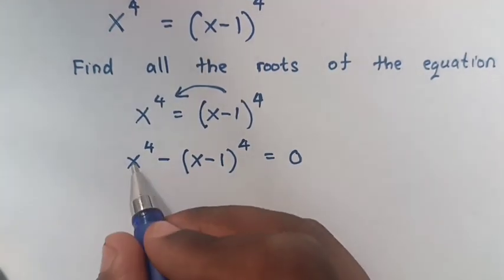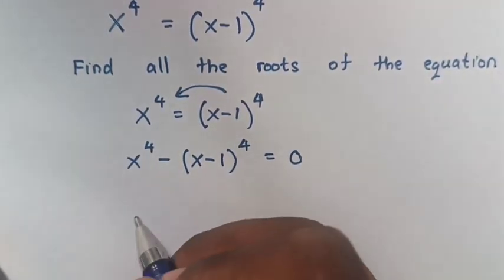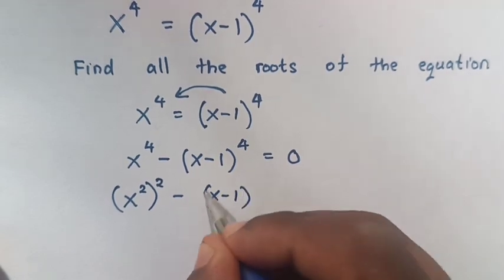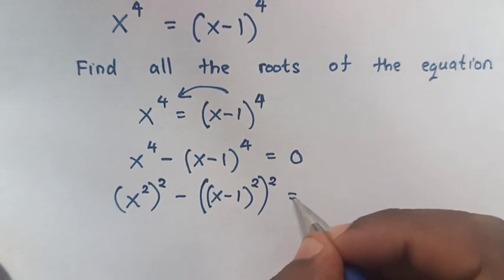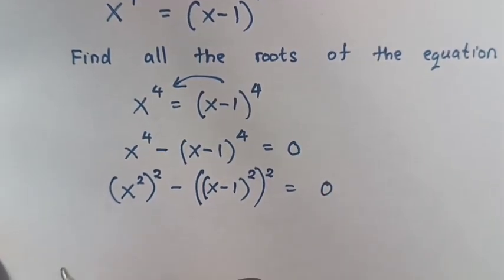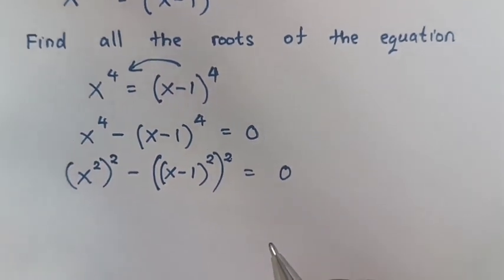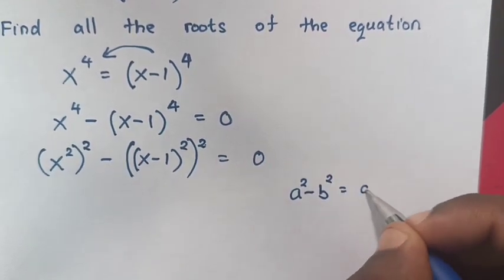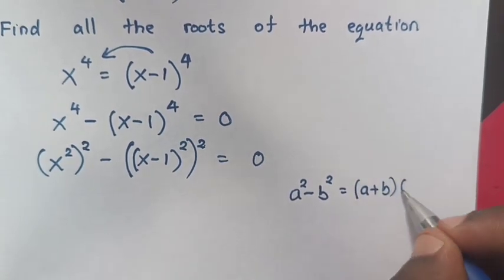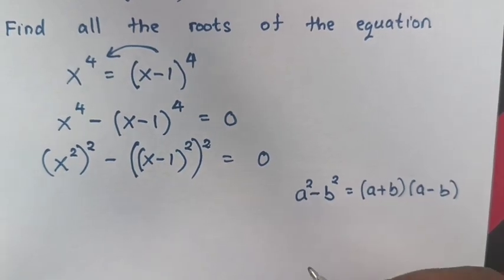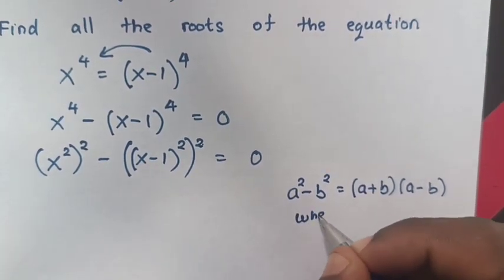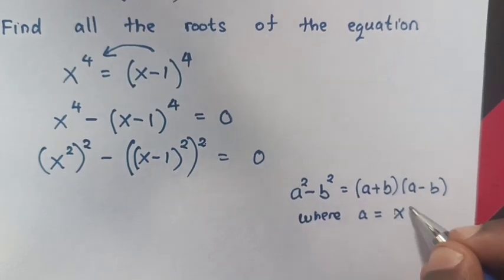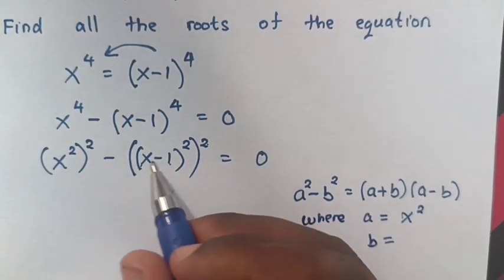We can see here is x power 4 and here power 4. So this is the same as x square bracket squared minus x minus 1 bracket squared bracket squared equals 0. We can see in our equation there is square and here square, so this equation is in the form of a squared minus b squared equals a plus b bracket times a minus b. When we apply this rule, a will be x squared and b will be x minus 1 bracket squared.